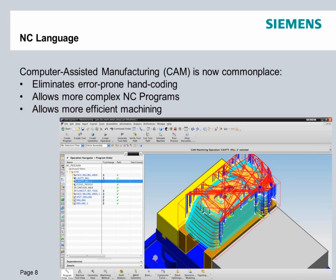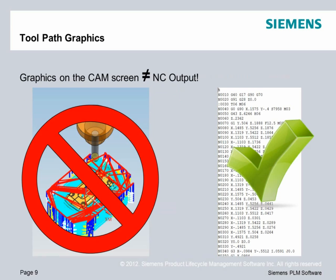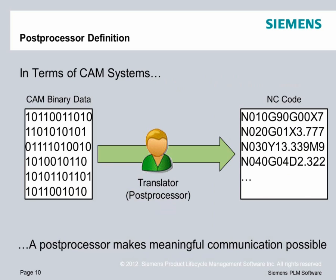Computer-assisted manufacturing came along in the 1970s and 1980s, and it is now very commonplace. The advantage to computer-assisted manufacturing is it makes it much faster to make an NC program. It eliminates a lot of the errors — typing errors and things like that — that we had with hand coding. It allows for far more complex NC programs in a much shorter time frame. However, you must understand that the graphics that you see on the CAM screen is not the NC output. The NC output is the NC language or the G-code language.